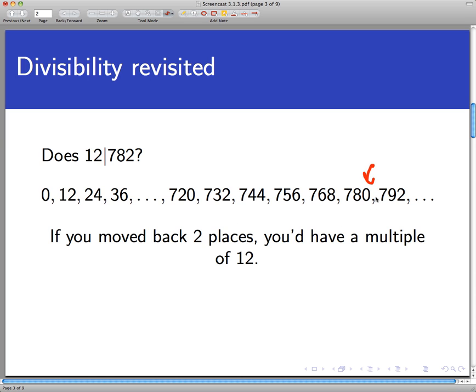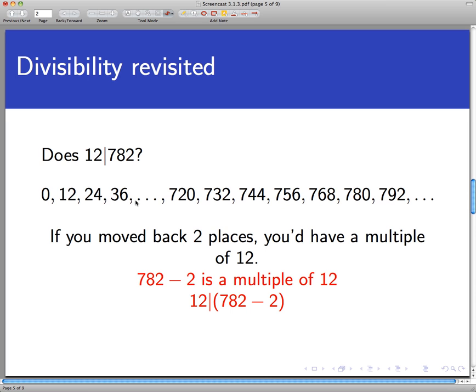It would go right in here, obviously, if it were in the list, and it's off. It's off by 2. If I go to 782, it would be a multiple of 12 if I move back two places, 781 to 780. So, it's not a multiple of 12, but it's two units off from being a multiple of 12. Another way of saying that is that 782 minus 2 is a multiple of 12. If you took the 782 and jacked it back a couple of places, you would have yourself a multiple of 12. And another way of saying that is that 12 divides the difference between 782 and 2.